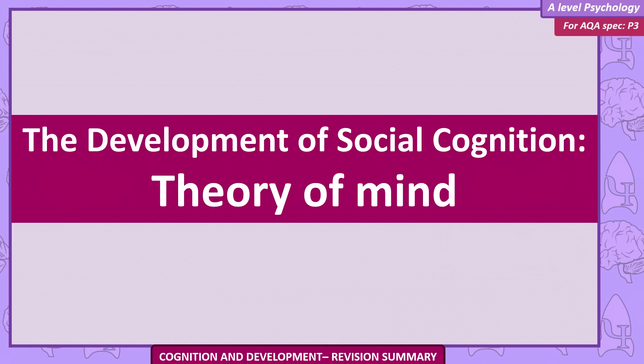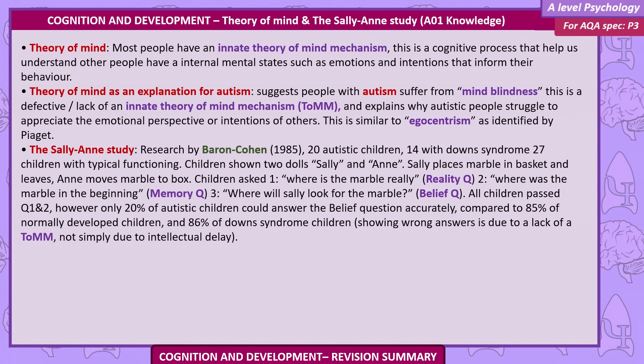Theory of Mind. Most people have an innate theory of mind mechanism — a cognitive process that helps us understand that other people have internal mental states, such as emotions and intentions, that inform their behaviour. Theory of mind as an explanation for autism suggests people with autism suffer from mind blindness: a defective lack of an innate theory of mind mechanism, which explains why autistic people struggle to appreciate the emotional perspective or intentions of others. This is similar to egocentrism as identified by Piaget.